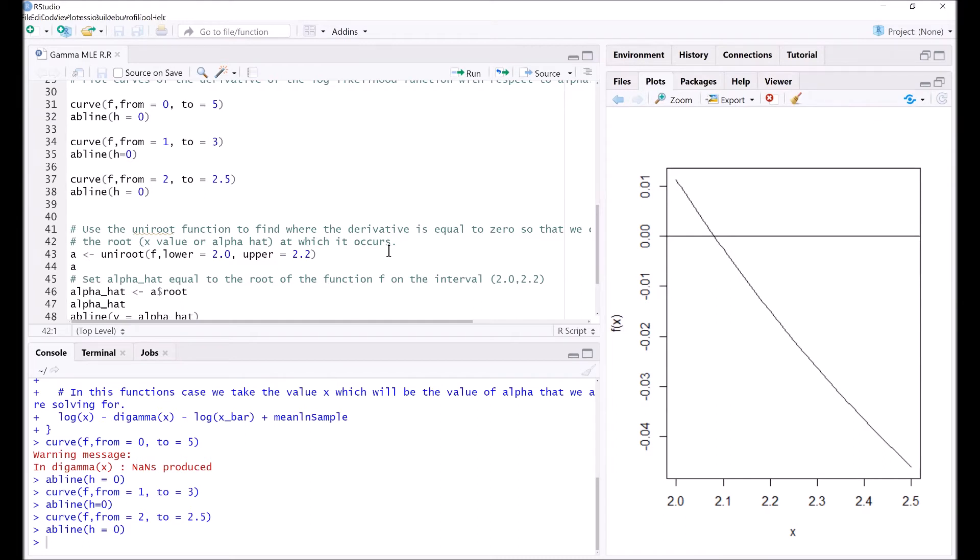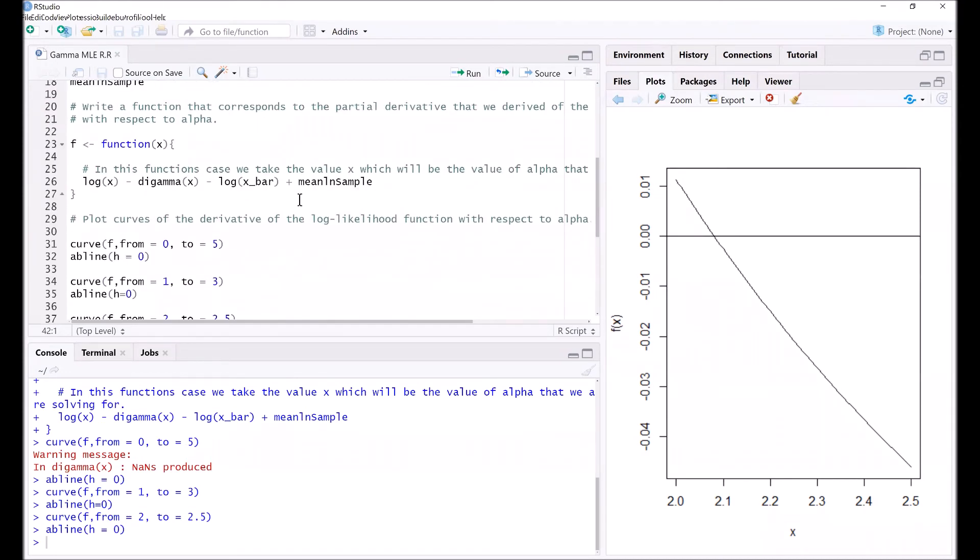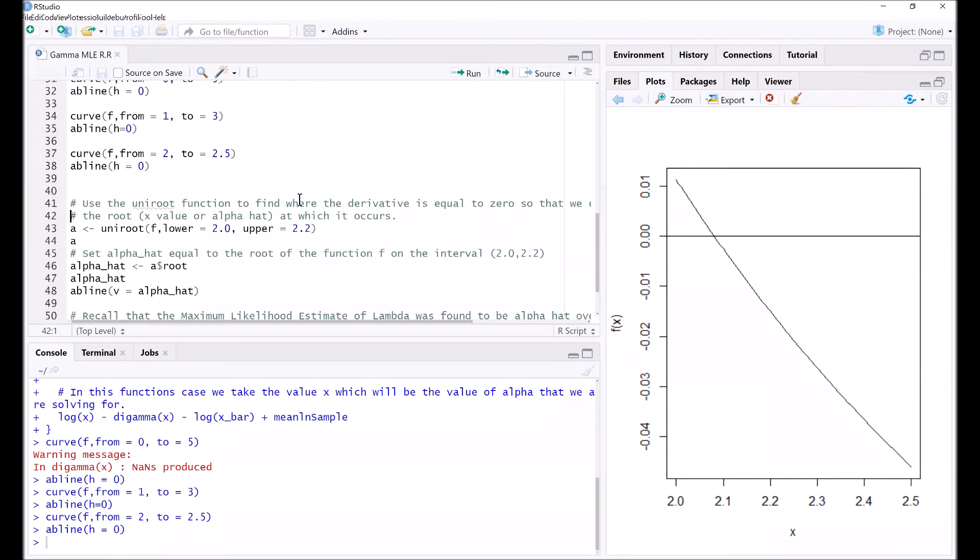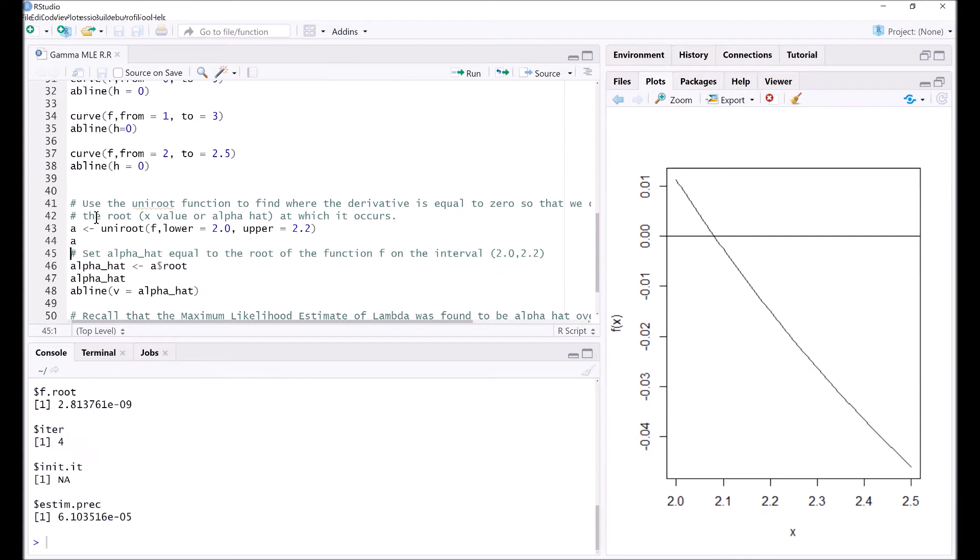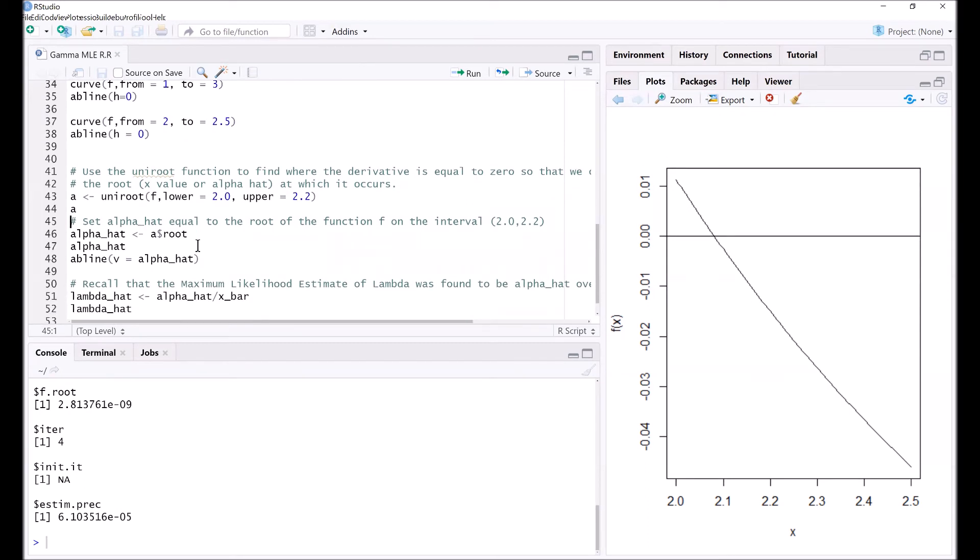We will use the uniroot function to find where the derivative, this function f, is equal to zero, where it intersects with the x-axis. So we set that value to be a, and a has these following attributes: the root, f of the root, number of iterations, initial iteration, and all of these other variables. But we are only interested in the root. So alpha hat is set equal to the root, and we find that alpha hat is 2.80856.